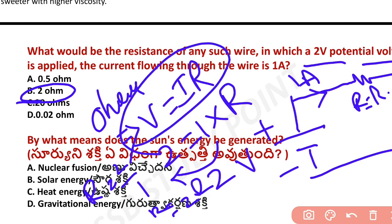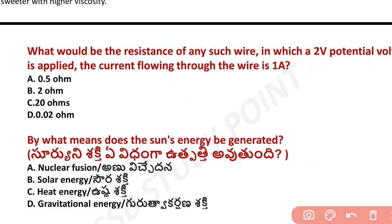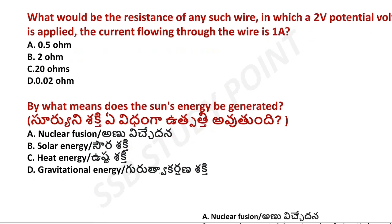Remember: V = IR is very important. In series connection, resistance is added; in parallel connection, resistance is divided. This is definitely important for the exam.